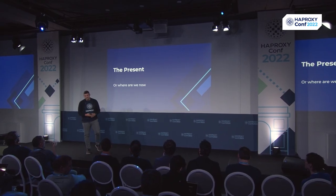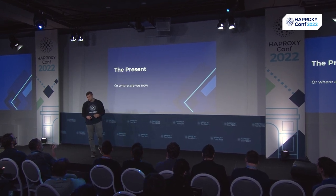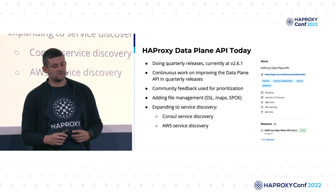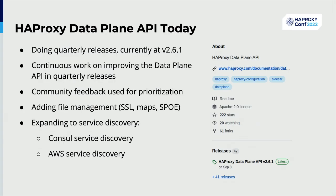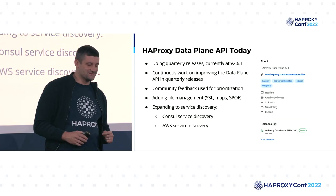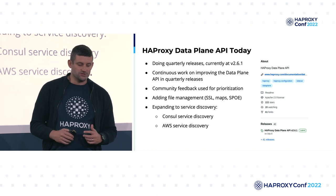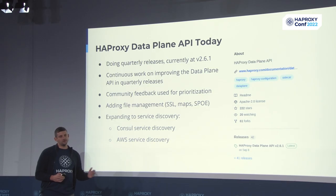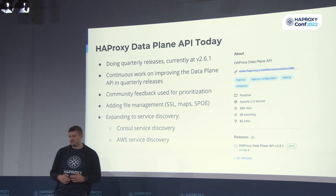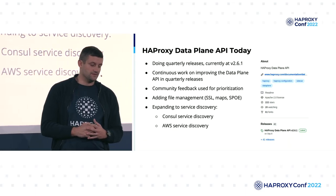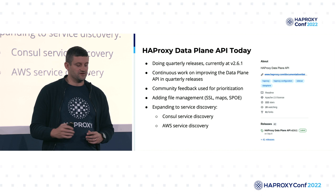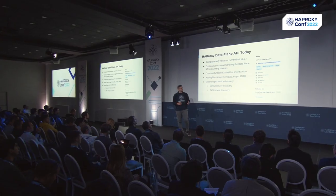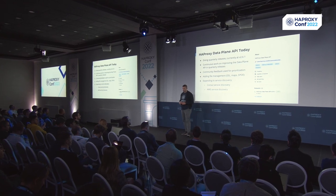That brings us to today. Three and a half years from the initial release, we are currently at version 2.6, and we like to think it's a pretty live and healthy open source project. We've had exactly 42 releases, over 1,400 commits from more than 30 contributors, and over 70,000 downloads on GitHub — not counting Docker downloads, as we ship the Data Plane API in our official HA Proxy Docker images. All of those numbers are growing steadily. We've been releasing at a quarterly pace for minor versions while supporting two previous minor versions with bug fixes, and using community feedback to grow HA Proxy configuration keyword support.